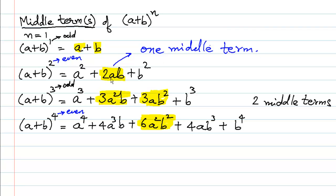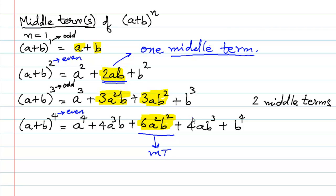For example, in (a+b)², a² is the first term, 2ab is the second term, and b² is the third term — so the second term is the middle term. In (a+b)⁴, 6a²b² is the third term and is the middle term. So if we generalize and make a formula, the formula is very simple.